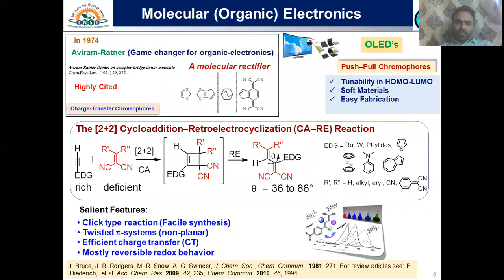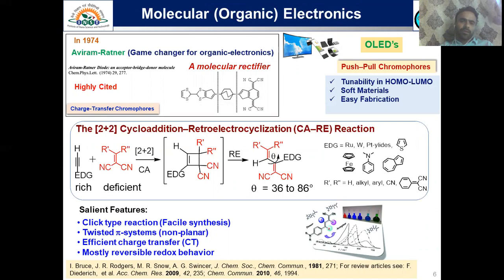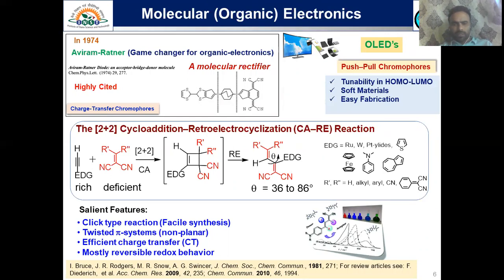In 1974, Aviram and Ratner did groundbreaking work — a highly cited paper — in which they synthesized an organic molecule rectifier. From that time, there was a huge transformation in organic electronics, because the molecule synthesized has huge scope in determining advanced functional materials. It has tunability in HOMO-LUMO gaps, and as a soft material, device fabrication was easy. After that, there has been a tremendous shift in research towards organic electronic materials.